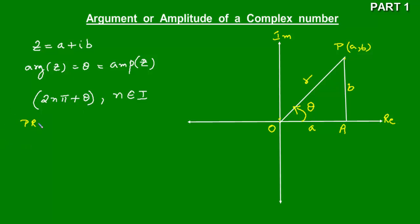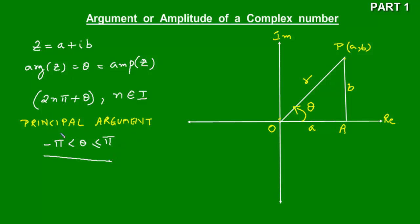So what is the principal argument? The principal argument is the value of theta which satisfies the inequality negative pi less than theta less than or equal to pi. Whenever theta satisfies this inequality, only that value is considered to be the principal argument, and by argument we mean principal argument. So whenever you have to find the argument, find the principal argument which satisfies this condition.